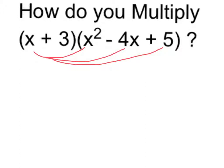My first three are going to be x times x squared is x cubed, then it's going to be minus 4x squared, and x times 5 is simply going to be 5x.